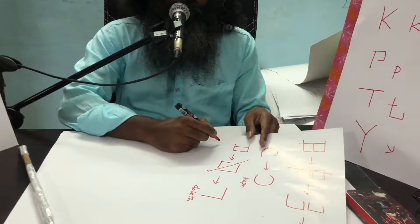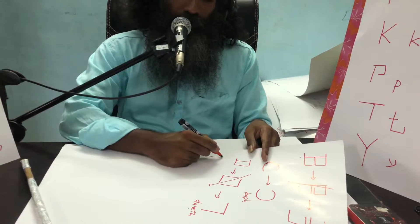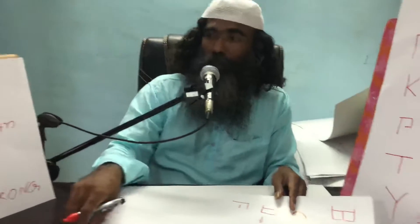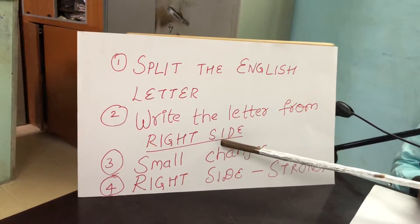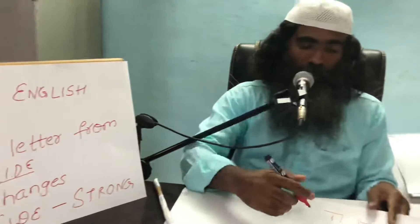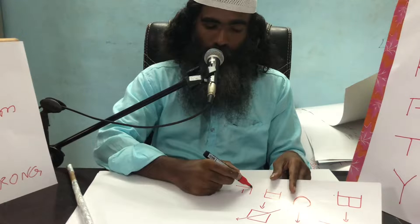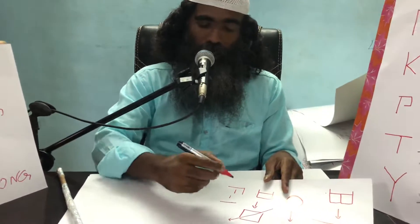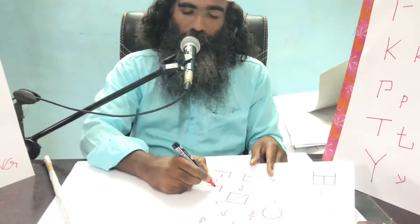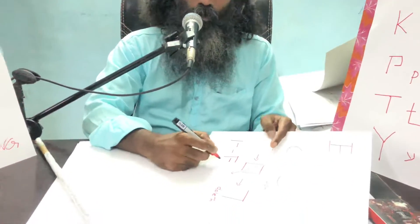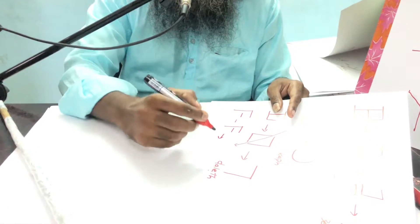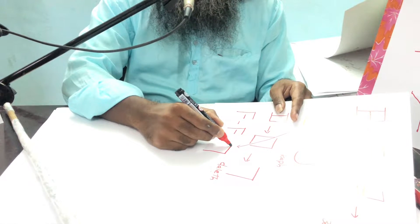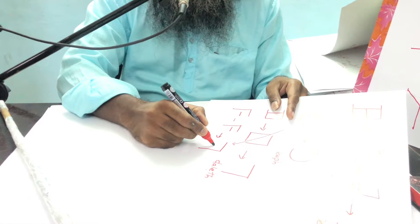Now I take the English alphabet capital F. It is written like this. To convert it into Pe, I use the second technique: write the letter from the right side. In writing the F, I write a vertical line and from the left I write the horizontal part. But in Hebrew, to convert it into Hebrew, I will write it from the right side — a vertical line and the horizontal line from the right side, and a similar horizontal line from the right side.